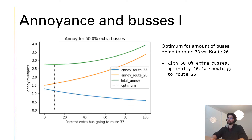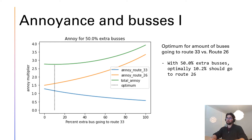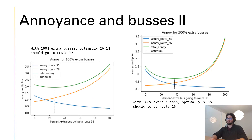We also have the optimization of extra buses. With 50% extra buses, the optimal allocation would be 10% to route 26 and the rest to route 33, based on the annoyance factor on the different routes — route 33 causes more annoyance, so more buses go there. This holds for 100% and 300% extra buses as well. The total annoyance factor decreases with more buses, and the optimal percentage going to route 26 also increases.